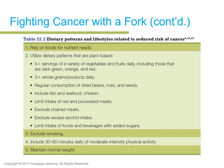These dietary patterns and lifestyle choices are related to reducing your risk of cancer. You can eat five or more servings of a variety of fruits and vegetables daily — including dark green, orange, and red varieties. Include fish, seafood, and chicken throughout the week. Exclude charred meats and excess alcohol intake. Avoid smoking, maintain a normal weight, and so on. This is straight from your book.